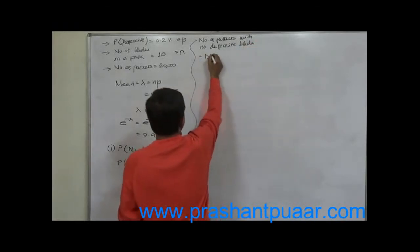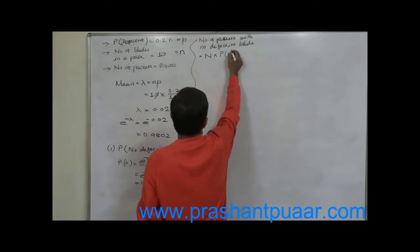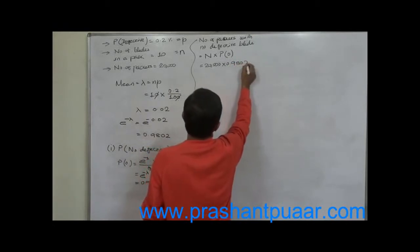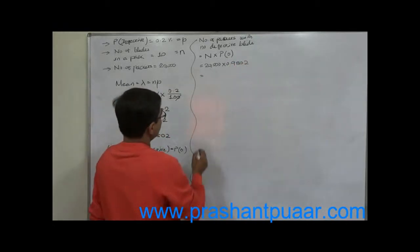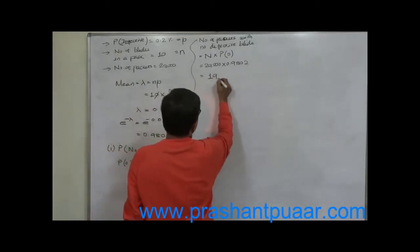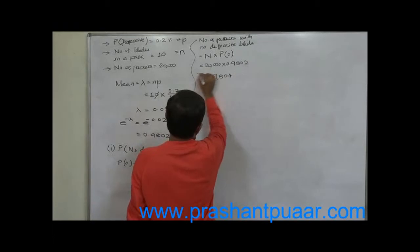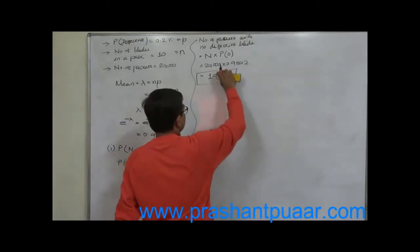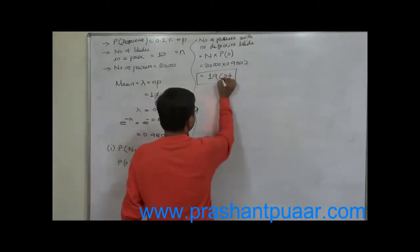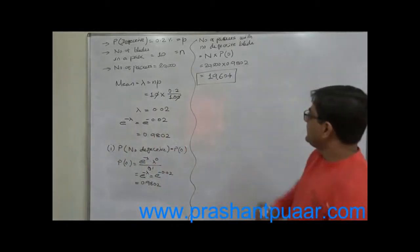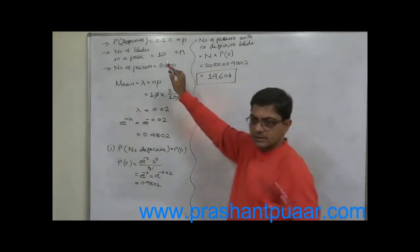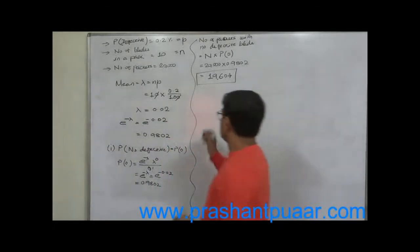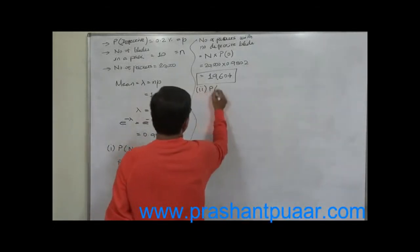The number of packets with no defective blades equals total number of packets multiplied by the probability of no defective, which is 20,000 × 0.9802 = 19,604. So out of 20,000 packets, we can expect that 19,604 packets containing 10 blades each will have no defective blade.